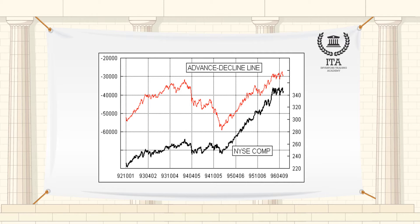As the formula reveals, the McClellan Oscillator is a momentum indicator that works similar to MACD.